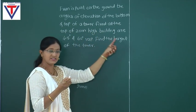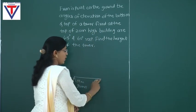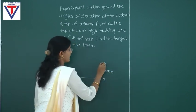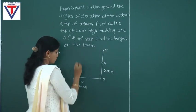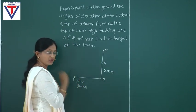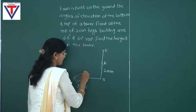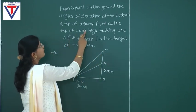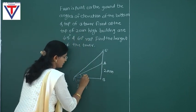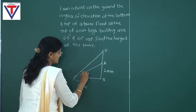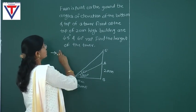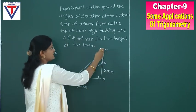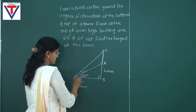The tower is fixed at the top of a 20 meter high building. First we draw the building. Let AB be our building which is 20 meters high. On top of it is the tower; let AC be our tower. From point P on the ground, the bottom of the tower (point A) and the top of the tower (point C) are observed. CB is perpendicular to PB.